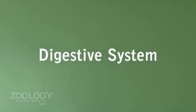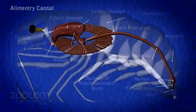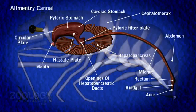Digestive System. The alimentary canal consists of mouth, buccal cavity, esophagus, stomach, intestine, and rectum.